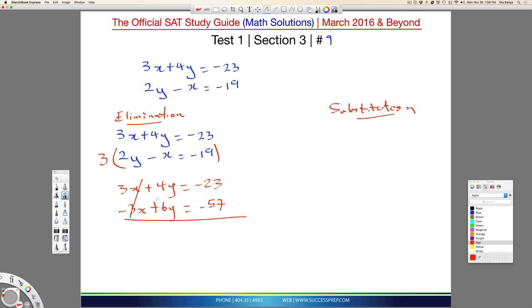So, if you combine that, that crosses out. This gives you 10y. And then when you add this up, you're going to get negative 80 divided by 10 on both sides. So, y is negative 8.